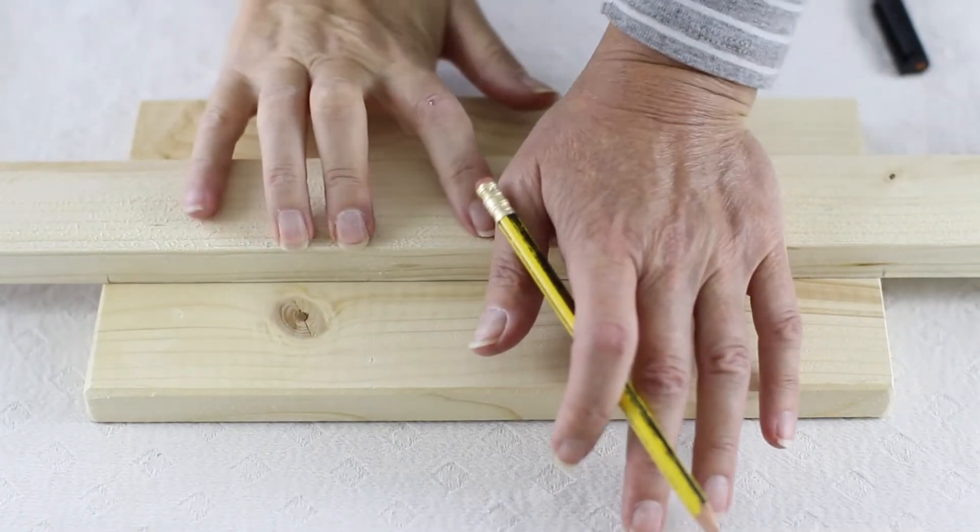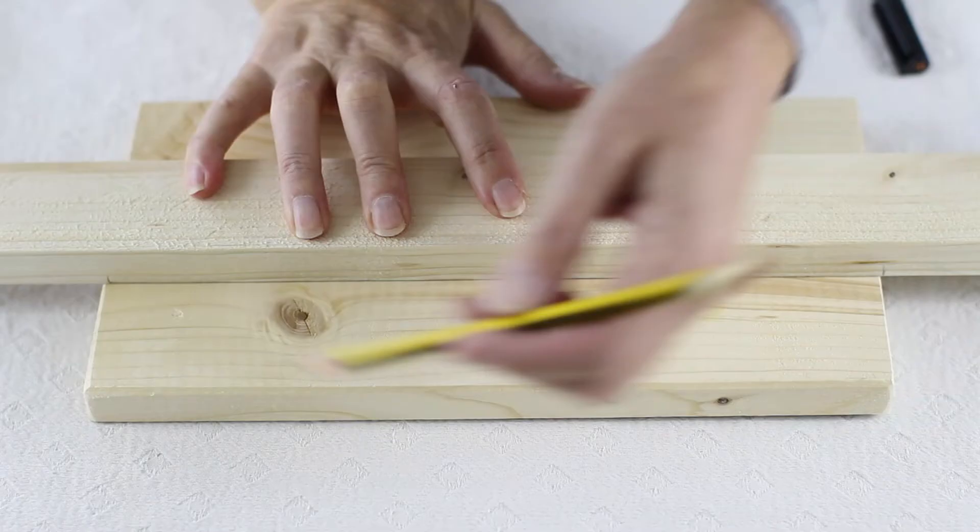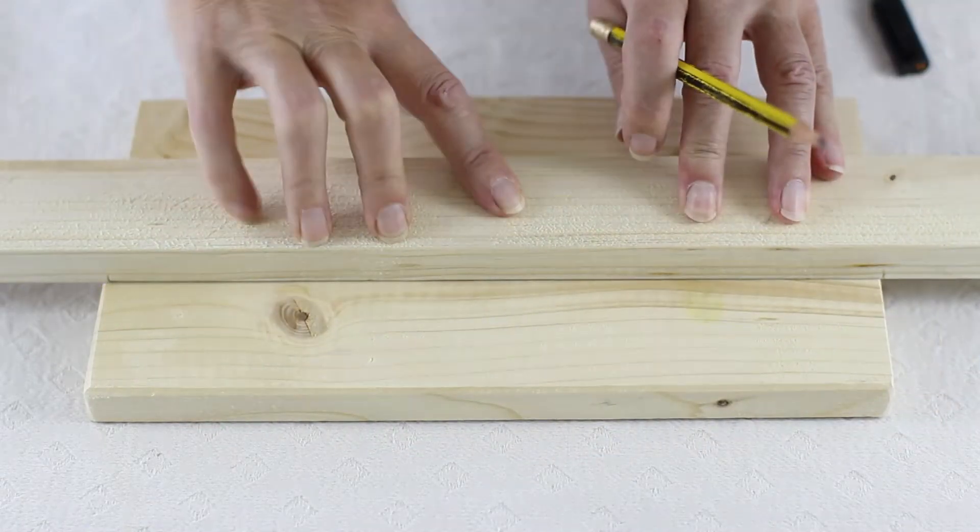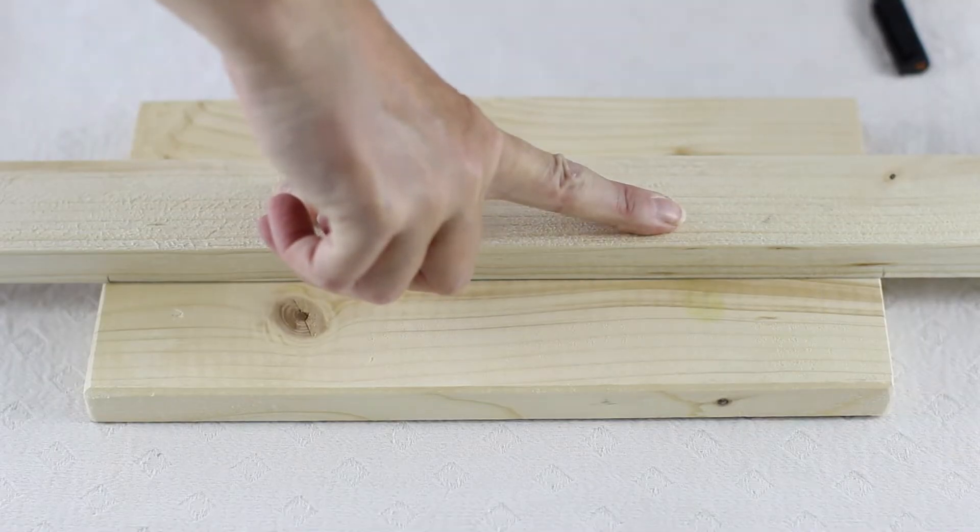And now I'm just marking where I'm going to glue the bottom of the triangle to the base. And the stand is just a piece of wood around 11 by 6 inches, 28 by 15 centimeters.